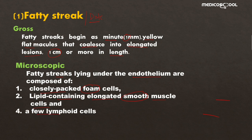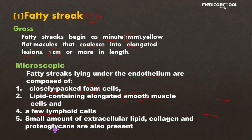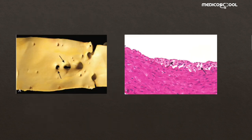Along with foam cells and lipid-containing smooth muscle cells, a small amount of extracellular lipid, collagen, and proteoglycans are also present. In summary, fatty streaks consist of foam cells, lipid-containing smooth muscle cells, inflammatory cells, and extracellular lipid, collagen, and proteoglycans.